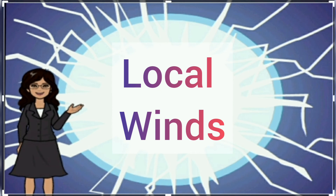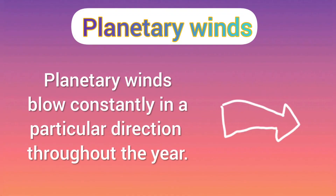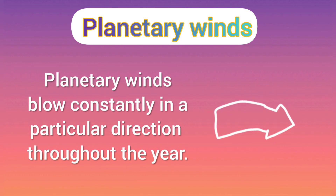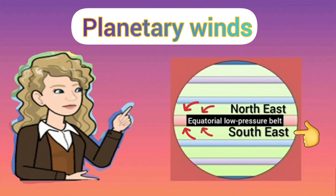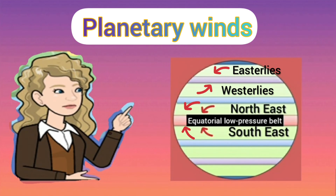The first type is planetary winds, the second is seasonal winds, and the third is local winds. Planetary winds blow constantly in a particular direction throughout the year. In the diagram you can see permanent winds which blow in a fixed direction, such as northeast trade winds that blow in a north-easterly direction, southeast trade winds that blow in a south-easterly direction, and other permanent winds like westerlies and easterlies.